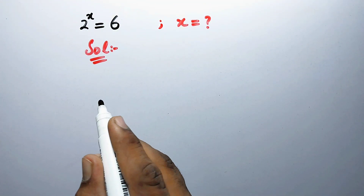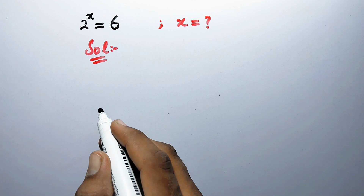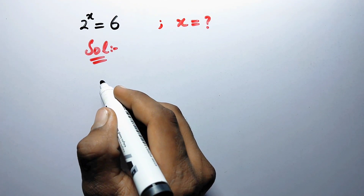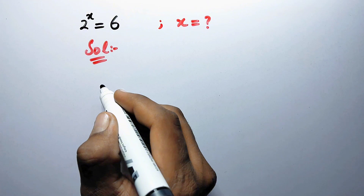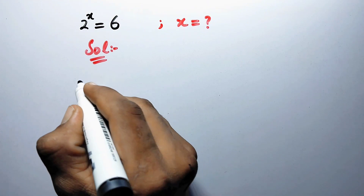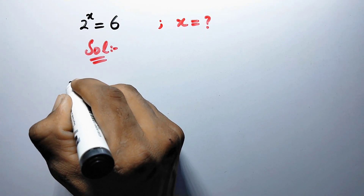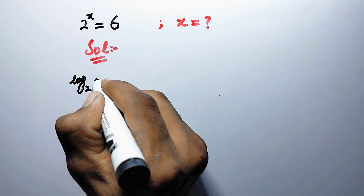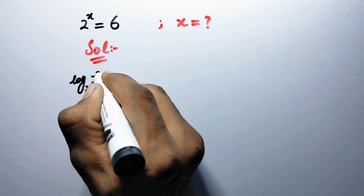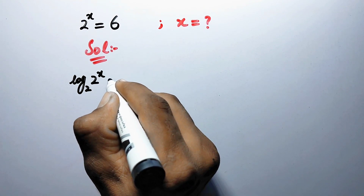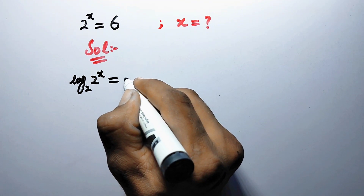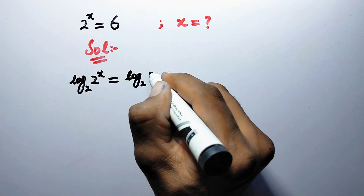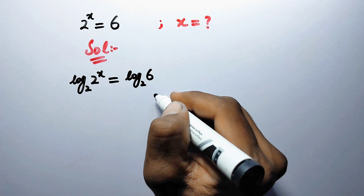In the first step we will take log to base 2 on both sides of the equation. Therefore we will write: log to base 2 of 2 to the power x is equal to log to base 2 of 6.